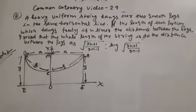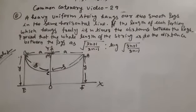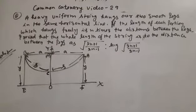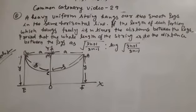The pegs A and B are 2a apart over which the string hangs. The free ends E and F of the string lie on the directrix. Let 2s be the length of the string hanging between the pegs A and B, and y be the height of A and B above the directrix.